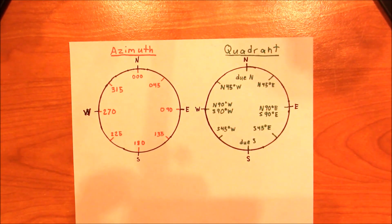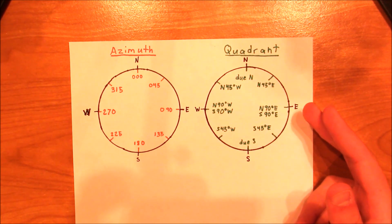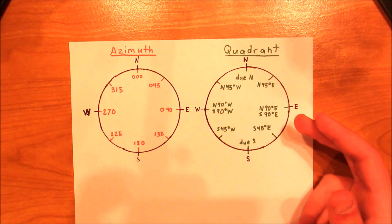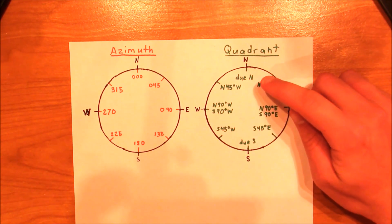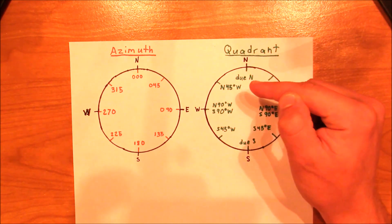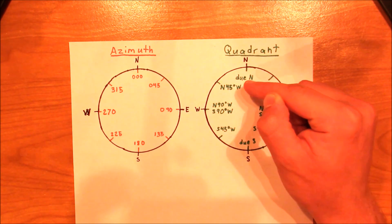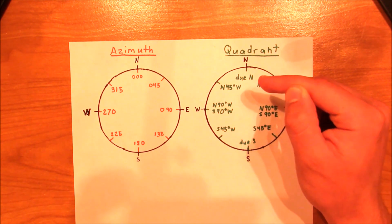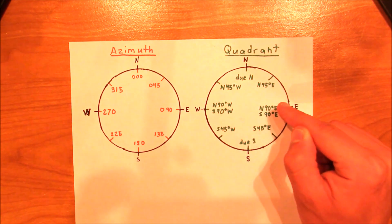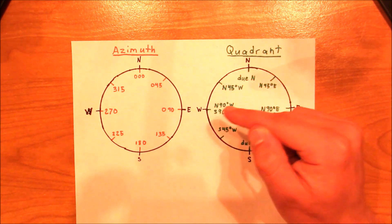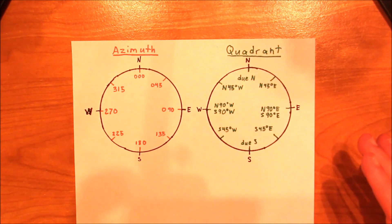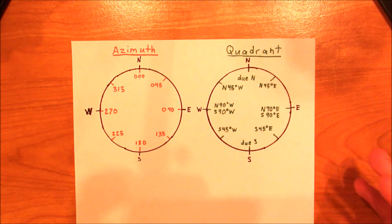Now let's take a look at the quadrant method. The basic idea is that we use our knowledge of what north, northeast, southwest, and all those cardinal and sub-cardinal directions mean. There are four different quadrants: the northeastern quadrant, the southeastern quadrant, the southwestern quadrant, and the northwestern quadrant. Each one of these quadrants is important because if we want to represent a particular angle within those quadrants, we need to know which quadrant we're in.